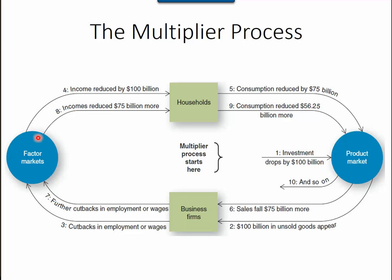Rising unemployment directly impacted each household. For example, in a three-person household where both parents used to have jobs, now perhaps only one has a job, or both parents' salaries were reduced. With income reduced, disposable income decreased too, which directly impacted consumption. Consumption decreased, which impacted production again — production was cut back, affecting business income, which further reduced consumption.